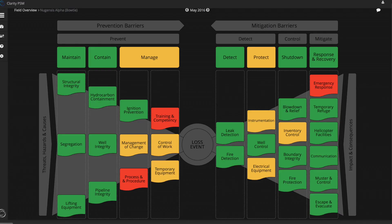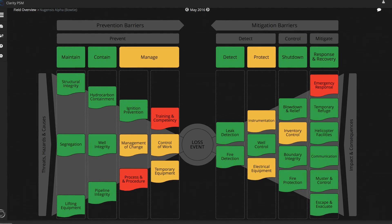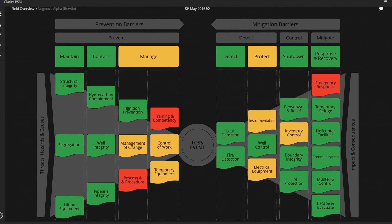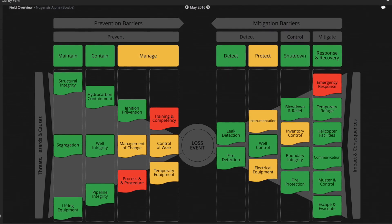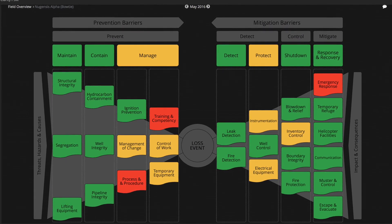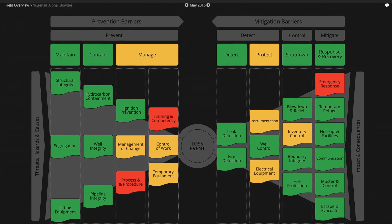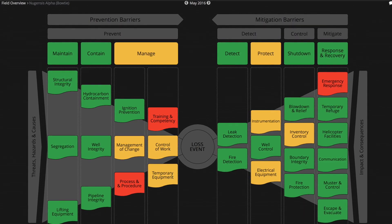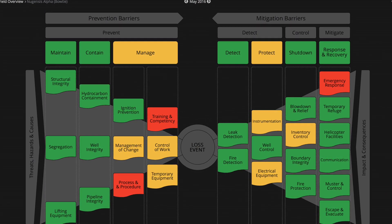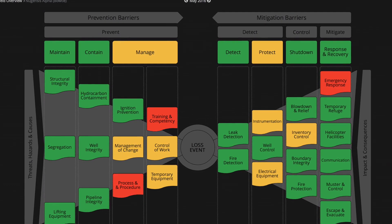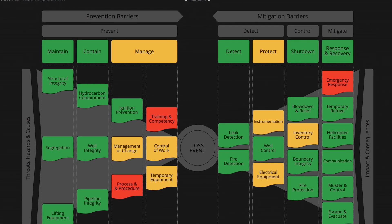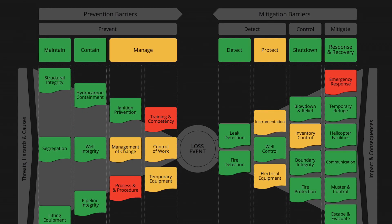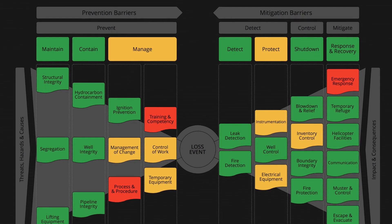I'm going to start off with the barrier model. After you select an asset, you're presented with an interactive bowtie showing the leading and lagging events that could contribute to a major incident, with a clear view of the red, amber, and green status. All of the safety critical elements on this screen are clickable, and when you click on a particular area you're taken down into the KPIs for that SCE.